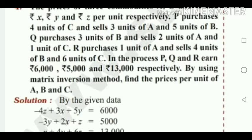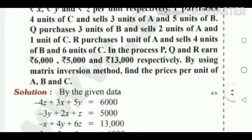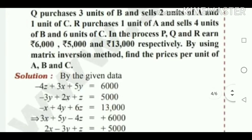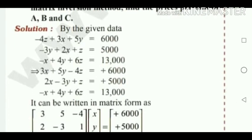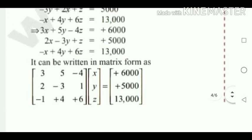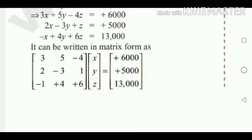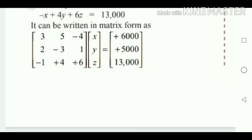If you understand this concept, it is easy to change the word problem into equation form. Q purchases three units of B — purchases means minus 3Y. Sales two units of A means plus 2X. One unit of C means plus Z. Equal to 5,000. R purchases one unit of A and sells four units of B and six units of C, with earnings of 6,000, 5,000, 13,000. The three equations are: 3x plus 5y minus 4z equals 6,000; 2x minus 3y plus z equals 5,000; minus x plus 4y plus 6z equals 13,000.